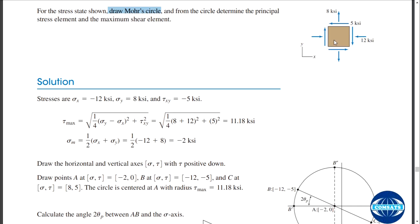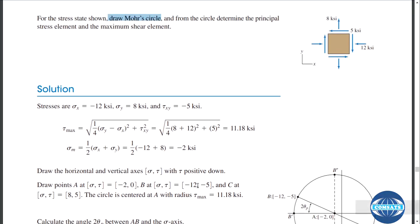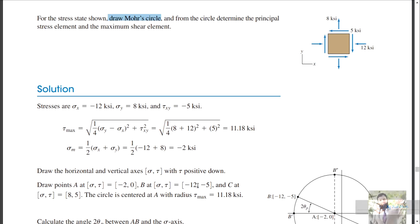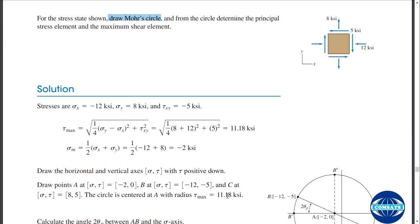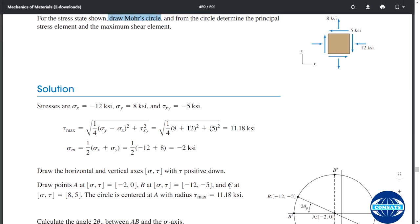Point B is at minus 12 and minus 5 KSI. KSI is a unit of stress — mega Pascal is also a unit of stress and that is in the SI system, the International System of Units. KSI stands for kilo pounds per square inch, which is the unit used in US customary units — you can also call that the FPS system, the foot-pound-second system. So point C is at minus 5 and 8 KSI.